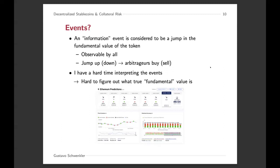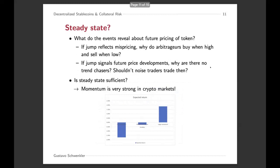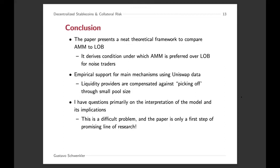My final comment was on the informational nature of the events. I'm not 100% convinced that these are information events — it's hard to argue that the fundamental value of these coins is perfectly observed or known. I wanted to dig a little bit deeper into that: how do we think about these events and what does this imply about the model? The model is in a steady state, but if the events are informational in nature, that would tell us something about a potential evolution of these prices that is not captured. The paper presents a neat theoretical framework to compare automated market making to limit order books and provides empirical evidence based on Uniswap data. My main comments were on the interpretation and implications of the model, and I believe this is part of a broader research agenda. Thank you.